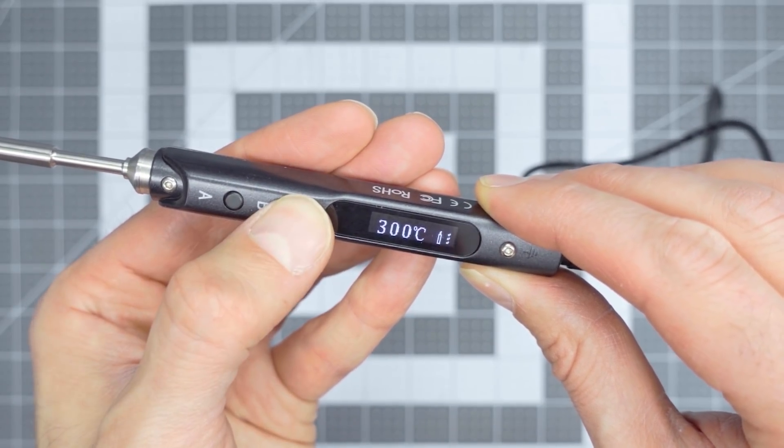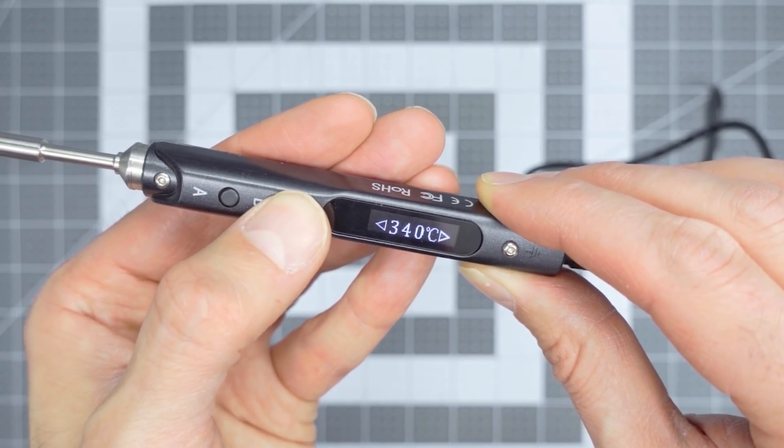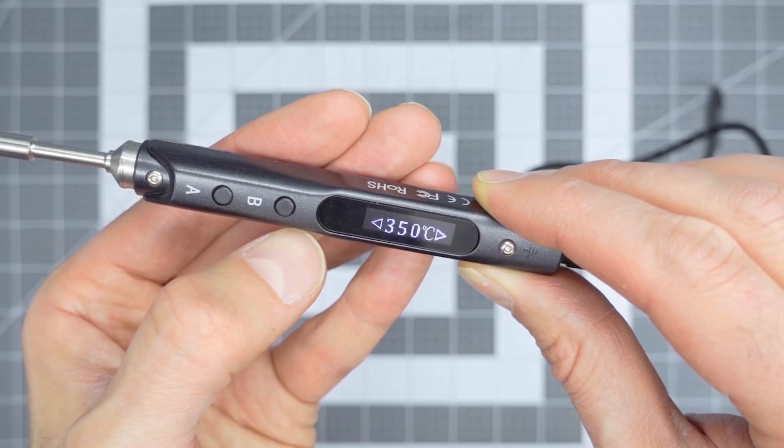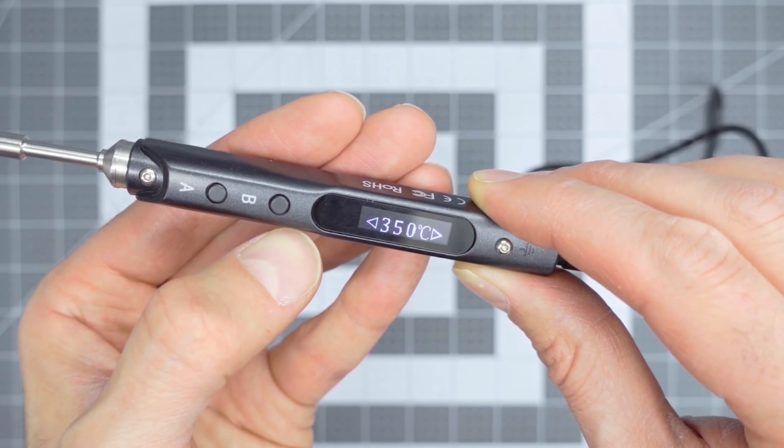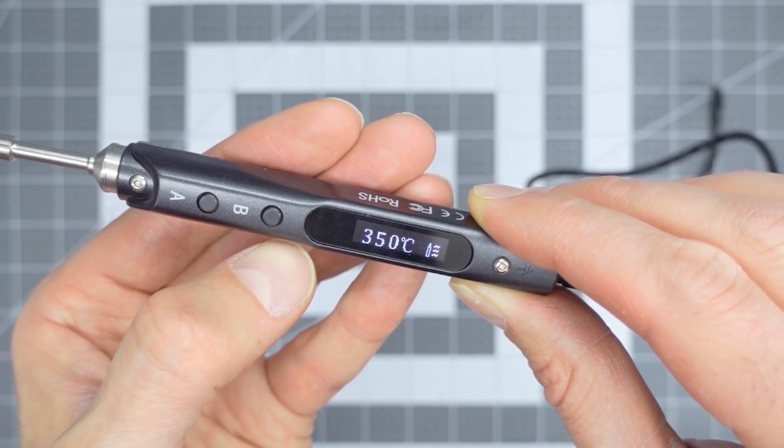And here I am adjusting the temperature. You just move up or down with B or A after a long press of B, and here we go, heating up back to 350. It doesn't take very long at all.